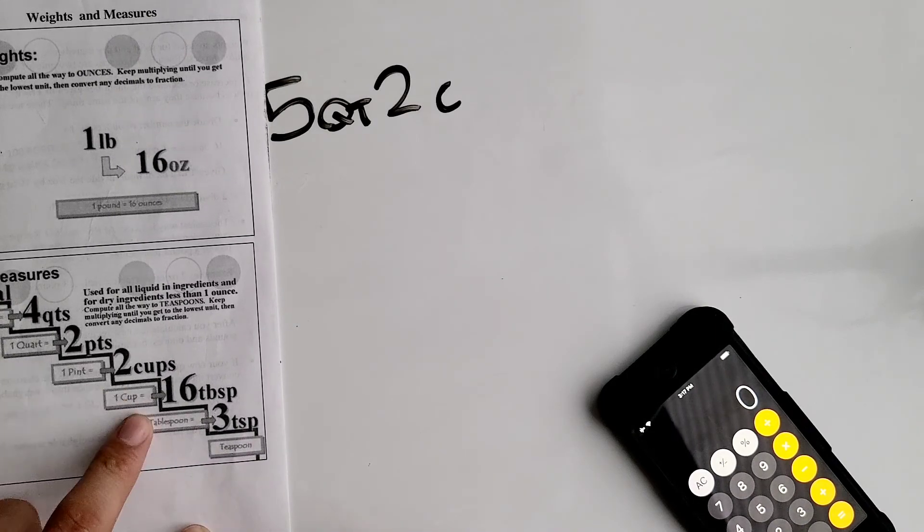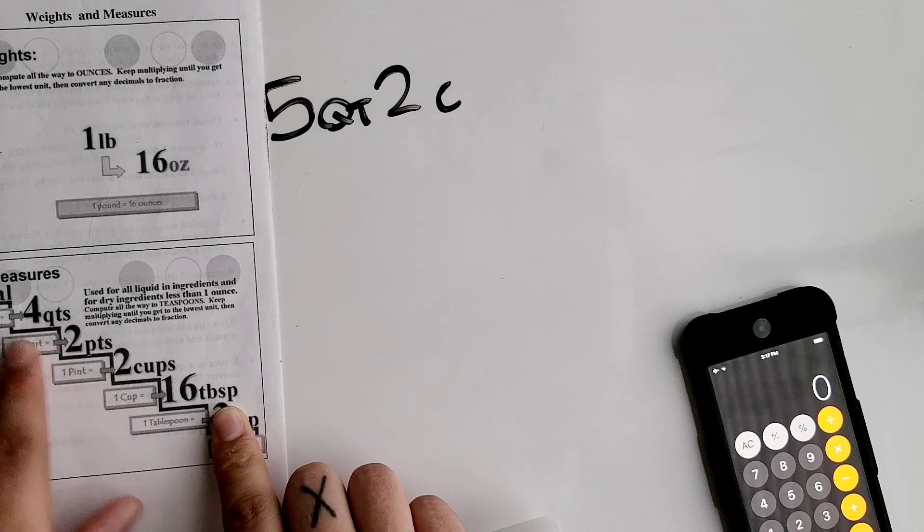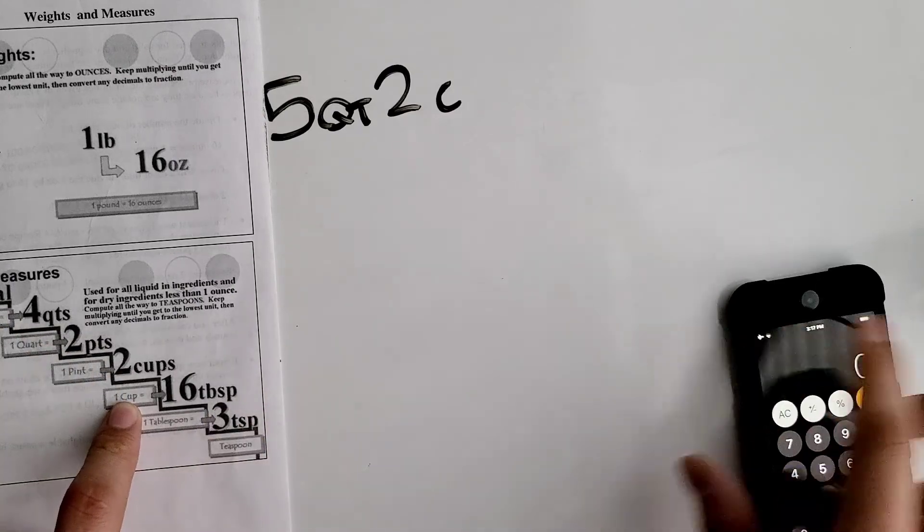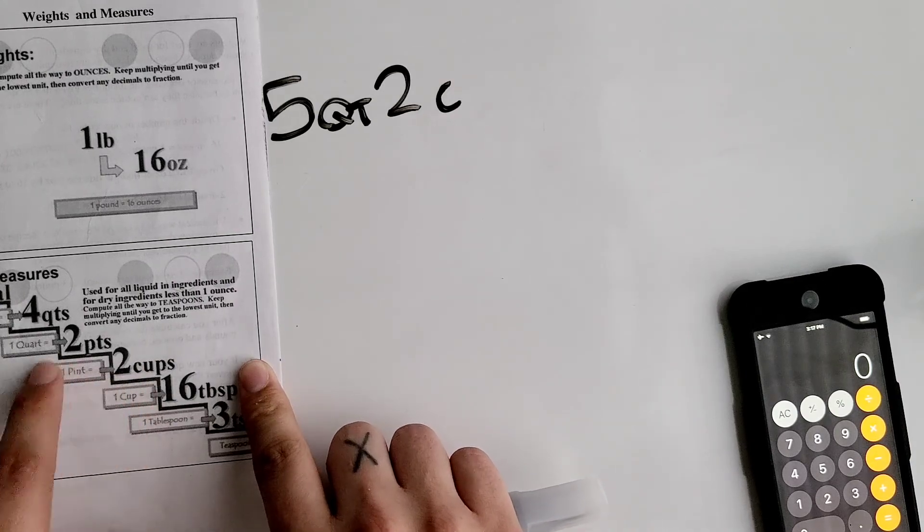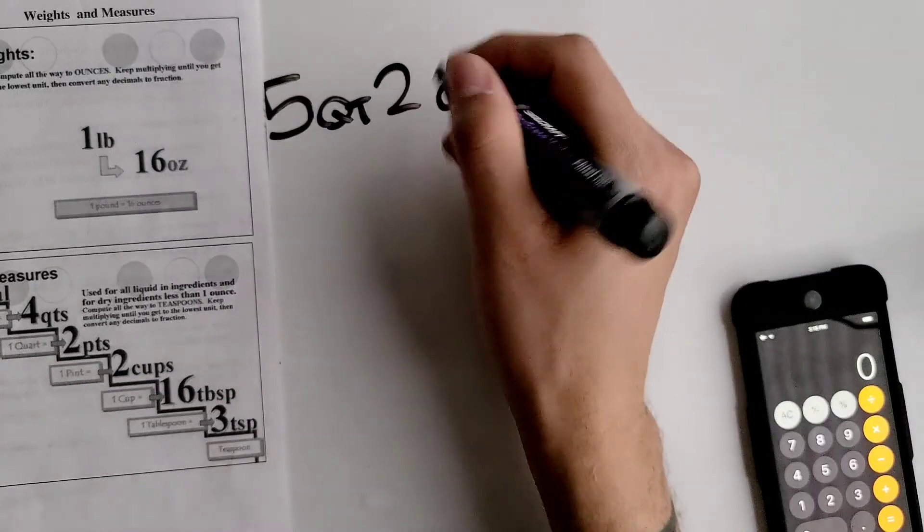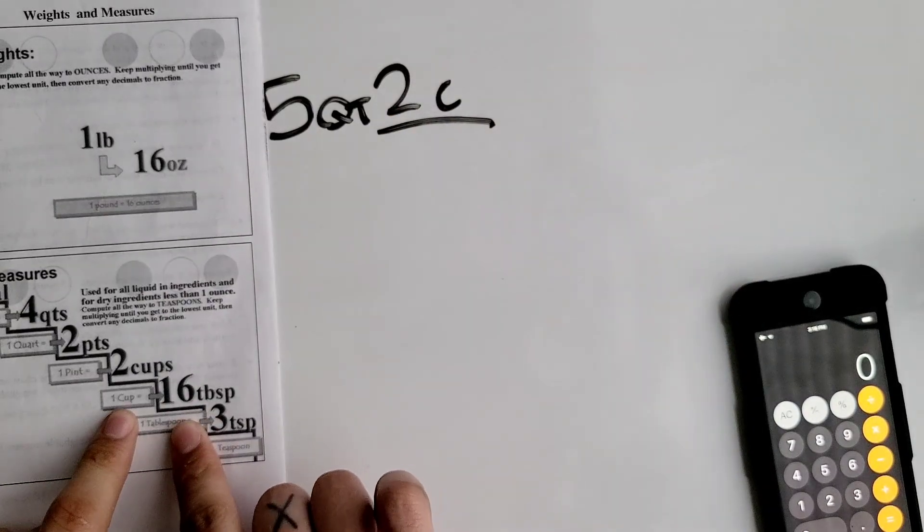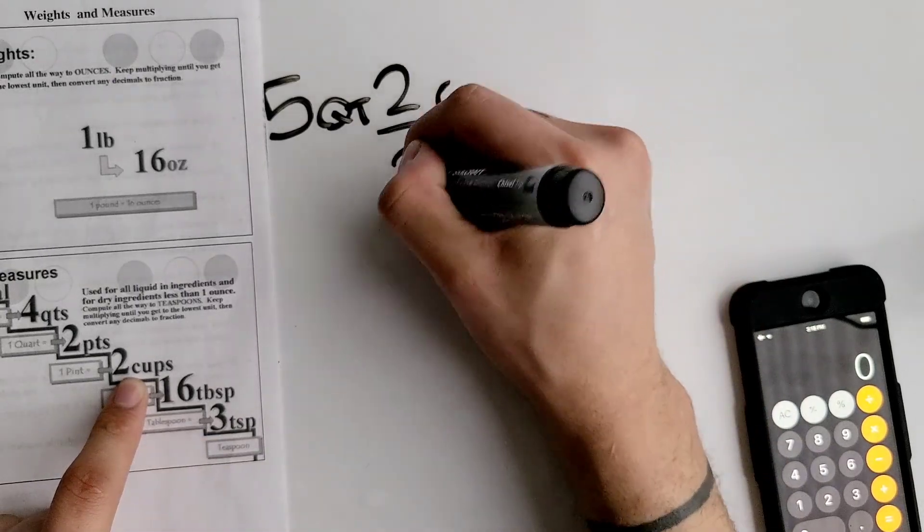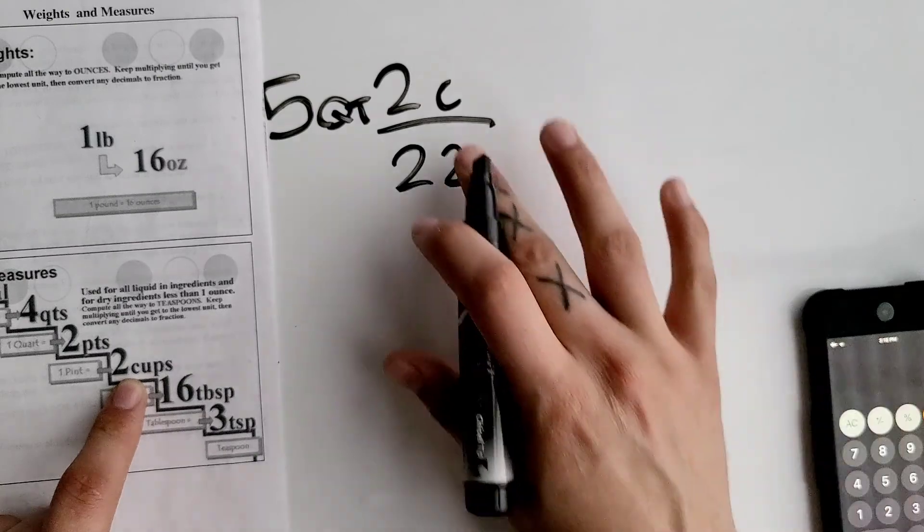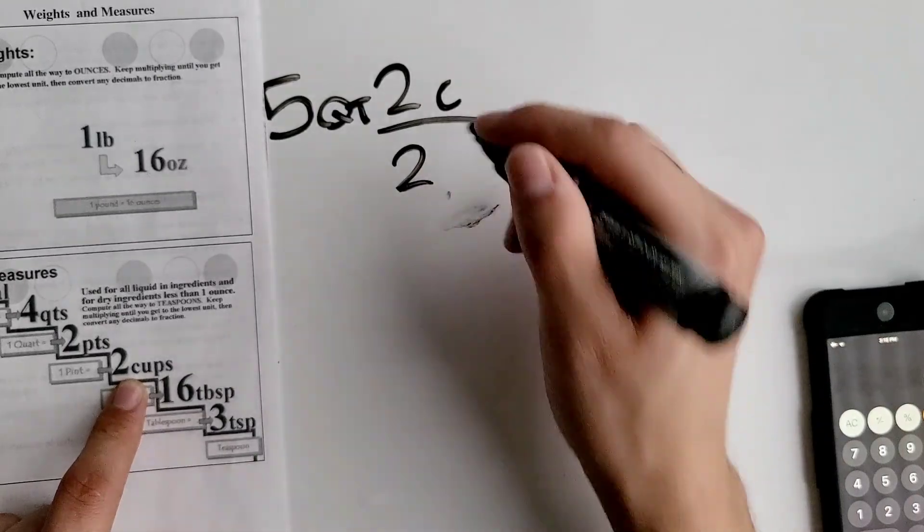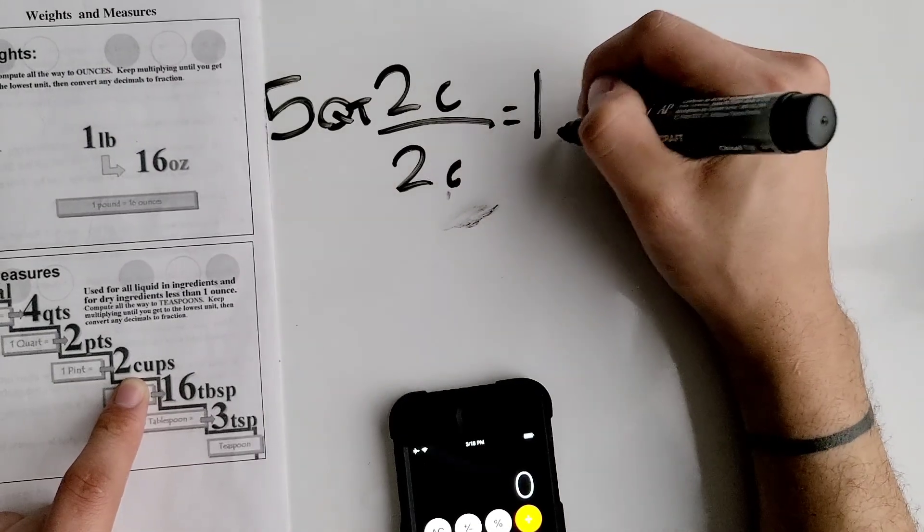Right now we're at cups. When you're going back up you have to divide. We have to divide the cups by the unit above it in order to make it into the unit above that one. So you got 2 cups right here. We have to divide that by 2 cups in order to convert it into pints. So 2 cups divided by 2 cups equals 1 pint.